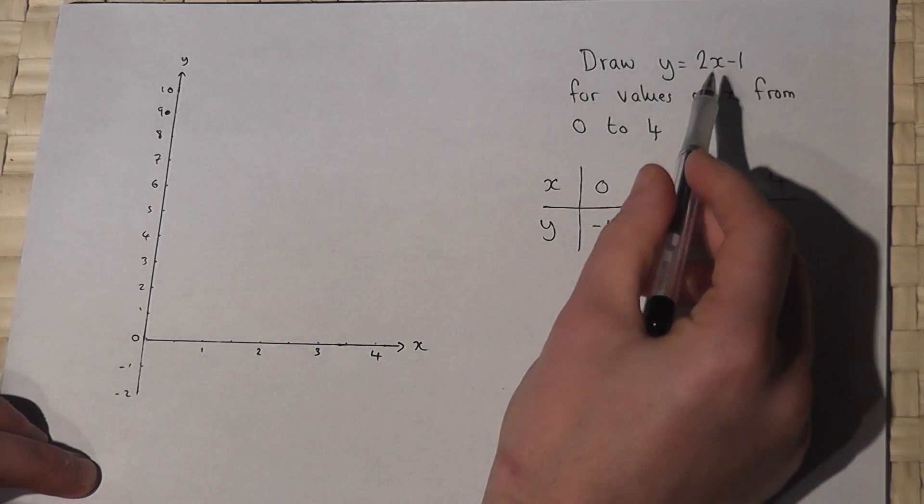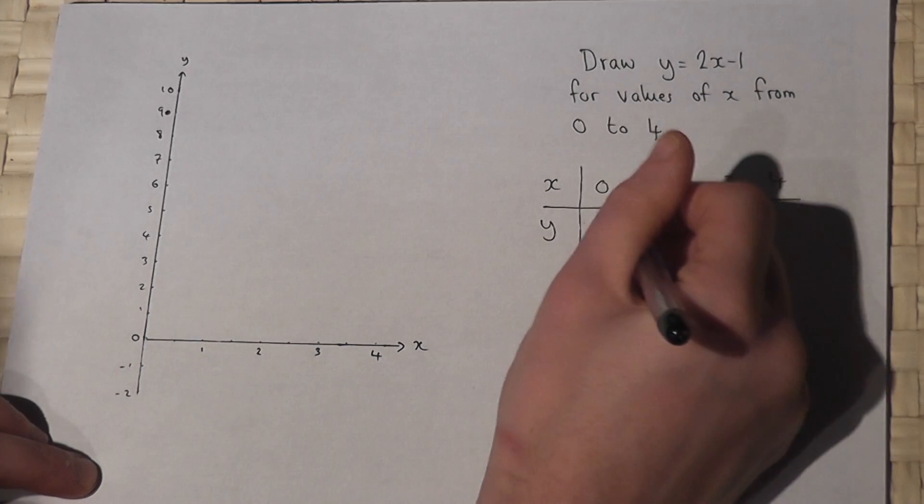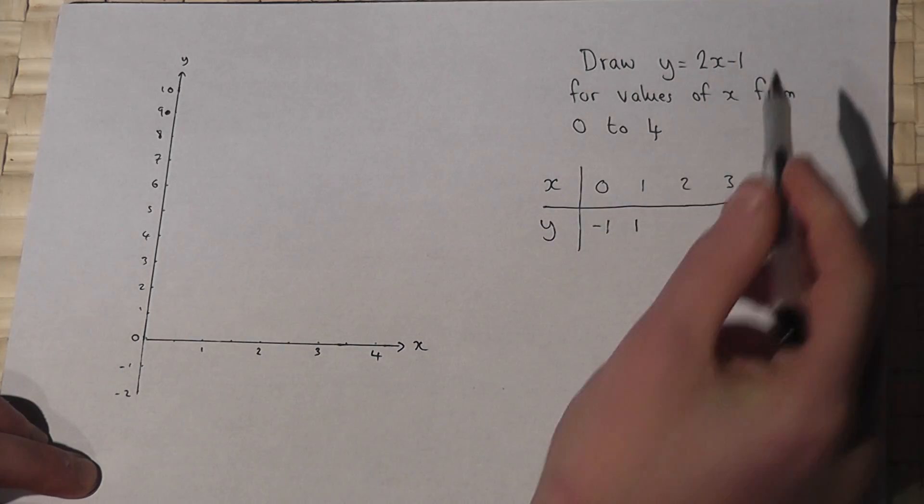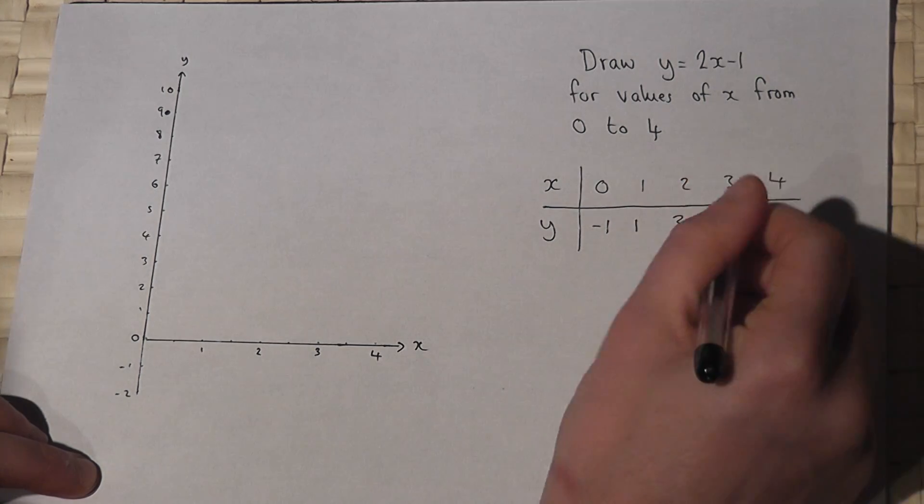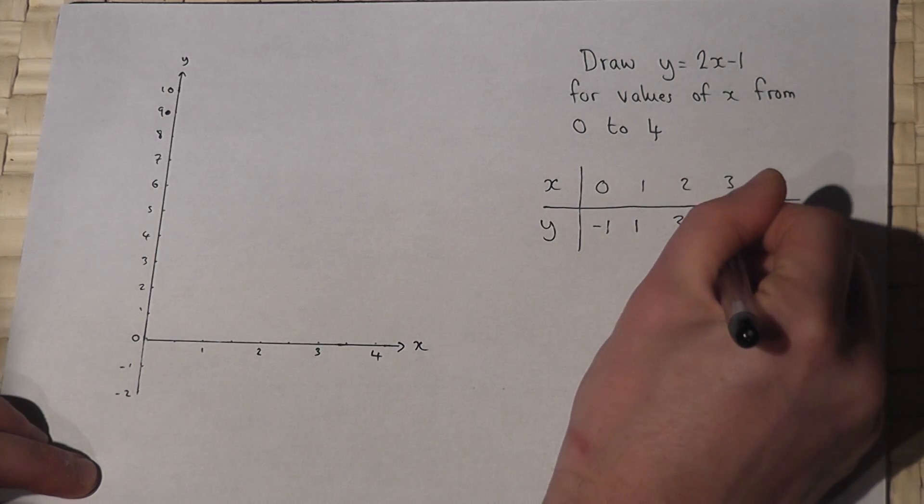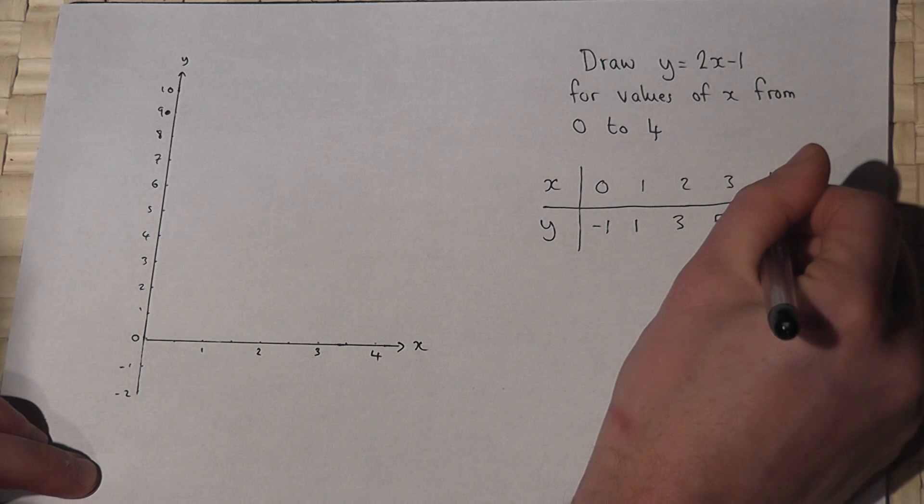When x is 1, 2 times 1 is 2, take 1 is 1. I keep on going, 2 times 2 is 4, take 1 is 3, 2 times 3 is 6, take 1 is 5, 2 times 4 is 8, take 1 is 7.